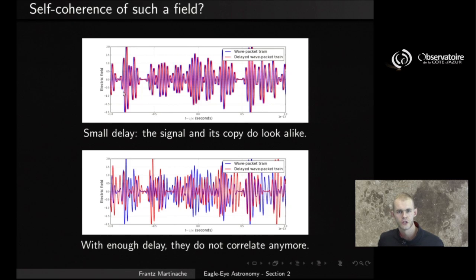And so here you have the example here, where I have two such train wave packets, if you want, and I've plotted a delayed copy of it, just barely delayed. And what you see is that if you have small delays, well, the signal and its copy do actually somewhat look alike, and so if the delay is not very large, you expect that the correlation between the two is actually to be quite good.